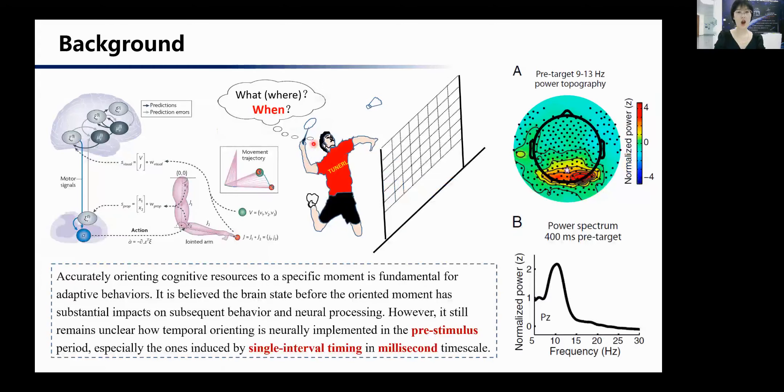As we all know, accurate orienting cognitive resources to a specific moment is fundamental for adaptive behaviors. It is believed the brain state before the orientated moment has substantial impacts on subsequent behavior and neural processing. However, it still remains unclear how temporal orienting is neurally implemented in the pre-stimulus period, especially the ones induced by single interval timing in millisecond time scale.